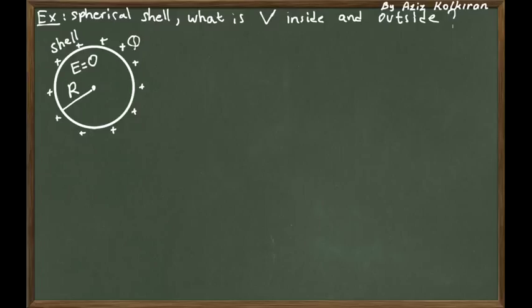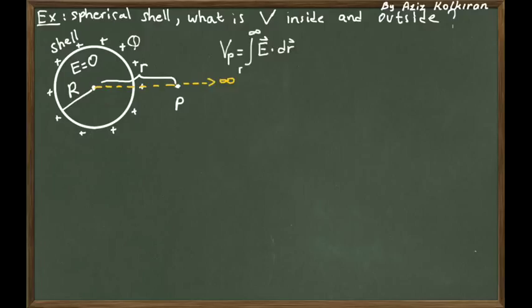We will start by picking a point on the outside of the shell, called point P, and it has a distance from point P to the center of the shell of small r. The definition of the potential at this point P is given by this line integral, as we have discussed in the lectures — the line integral from point P to infinity of the electric field created by this shell.